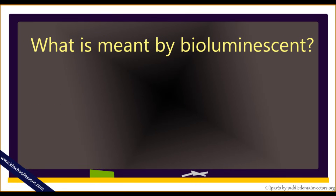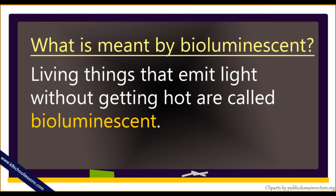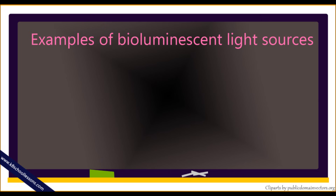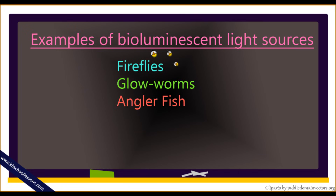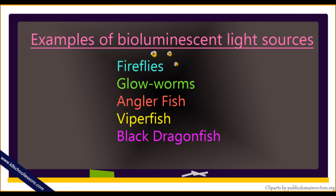What is meant by bioluminescent? Living things that emit light without getting hot are called bioluminescent. Examples of bioluminescent light sources include fireflies, glowworms, anglerfish, viperfish, black dragonfish and jellyfish.